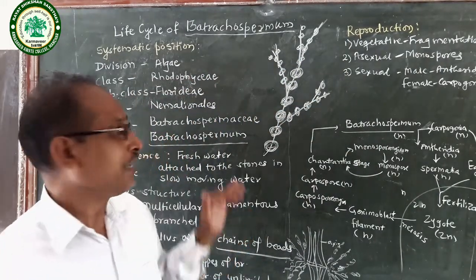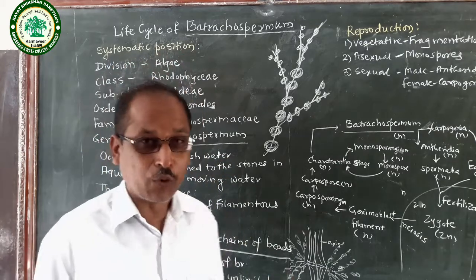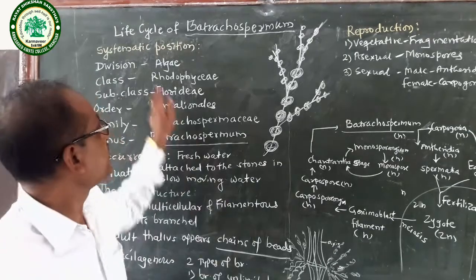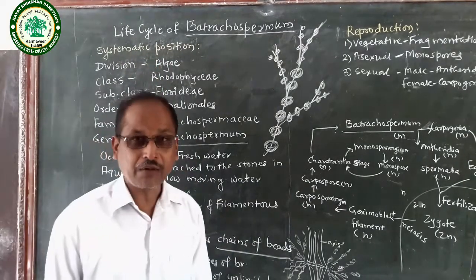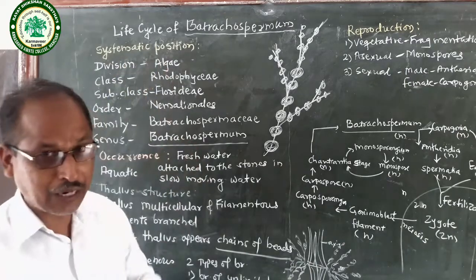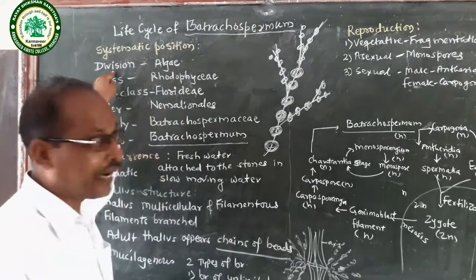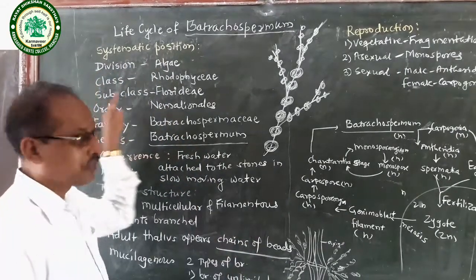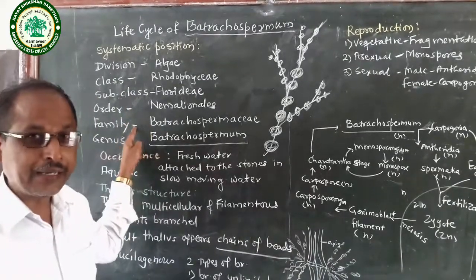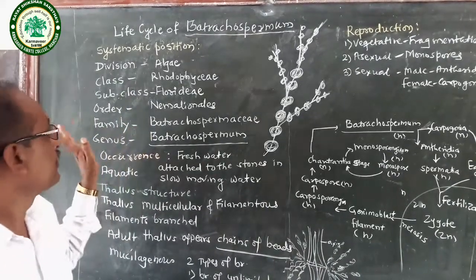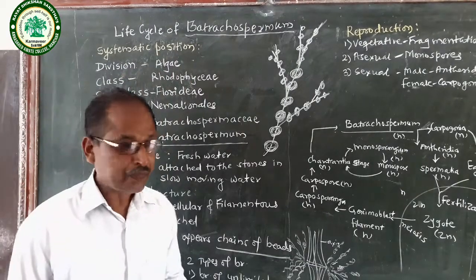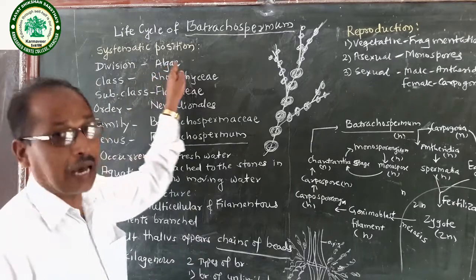We study the first point: Systematic Position, also called Taxonomic Position or Classification. In the Systematic Position, we have Division, Class, Subclass, Order, Family, and Genus. Batrachospermum is included in Division Algae.